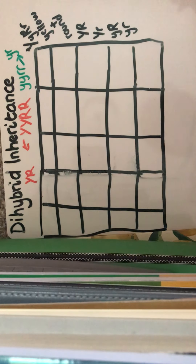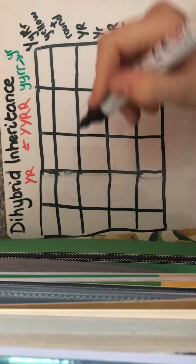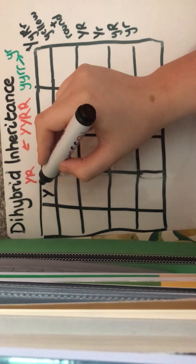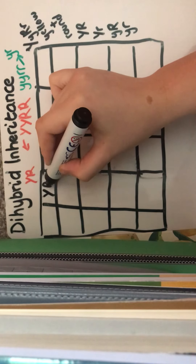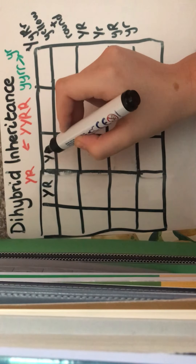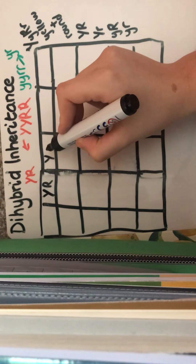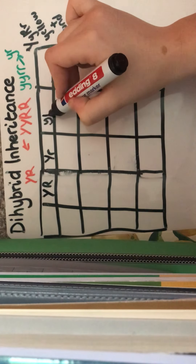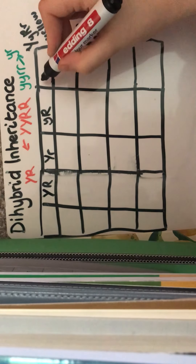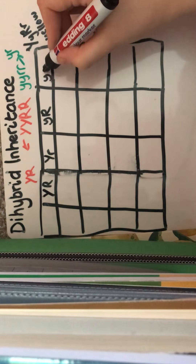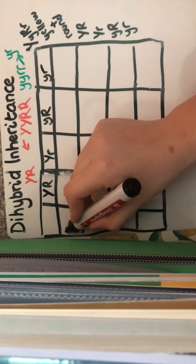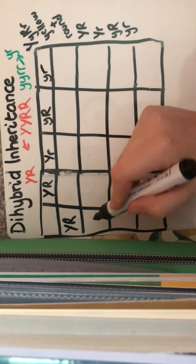So across the top we have capital Y capital R, capital Y lowercase r, lowercase y capital R, and lowercase y lowercase r. And that's the same for the other individual along the side.